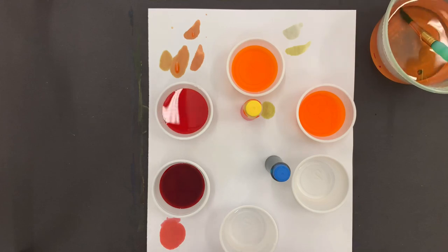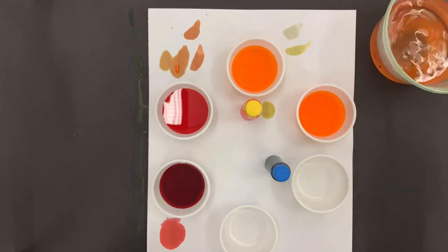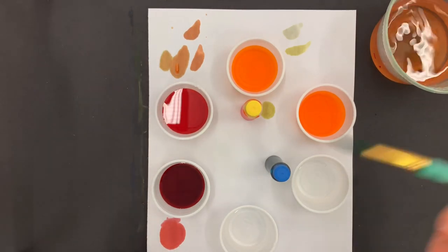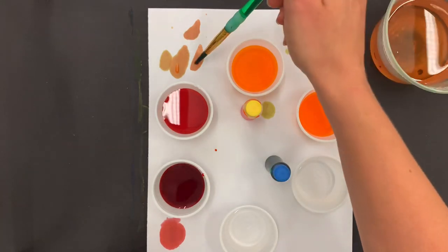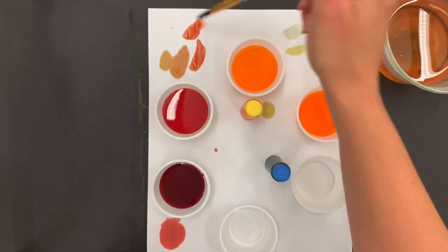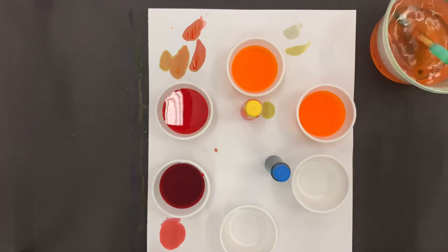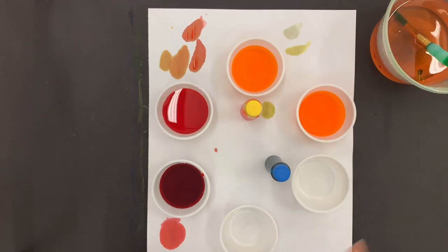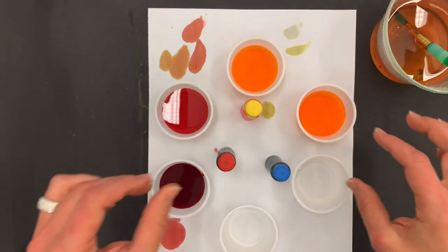I can always even add on my paper if I'm not sure I like that orange enough. I can always add a little bit of red to it too. Because remember, we mix colors on our paint palette or on our paper, and not in the cups. Only now are we mixing the colors in the cups.